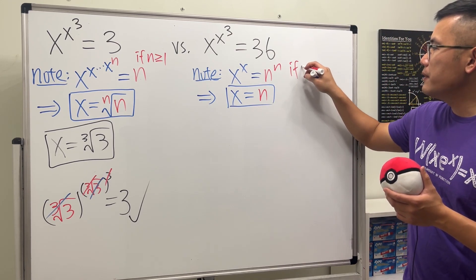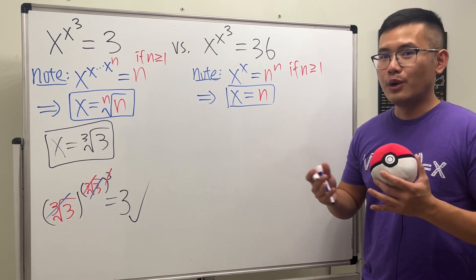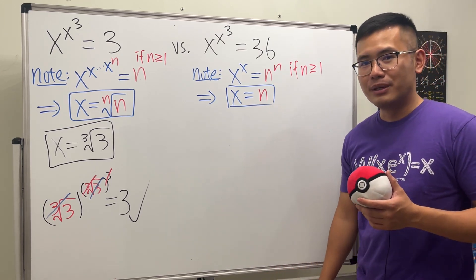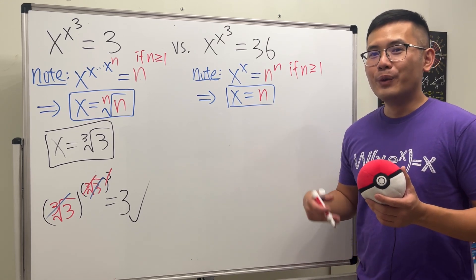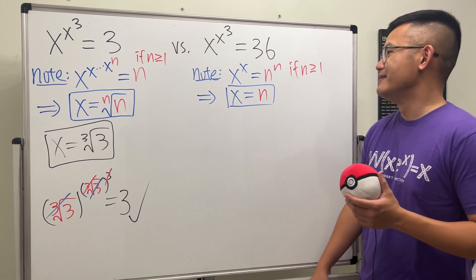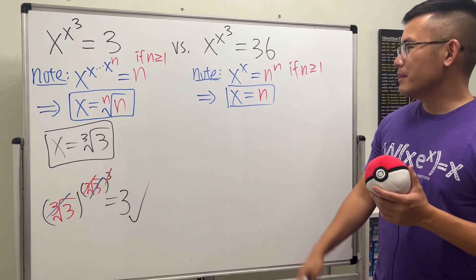But here we also have a technical part. In order for this to be the only answer, we will have to make sure that if n is greater than or equal to one. If n is in between zero and one, we will have to use the Lambert W function again. Worst part is we will actually have to use different branches.